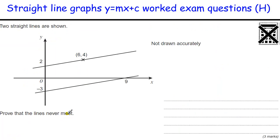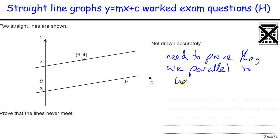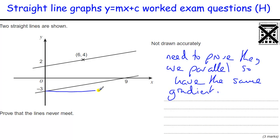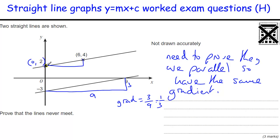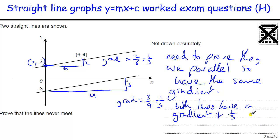Two straight lines shown. Prove that the lines never meet — they never meet, meaning we need to prove they are parallel, i.e., they have the same gradient. Parallel lines have the same gradient. Going across 9 and up 3, the gradient is 3 divided by 9, which is 1 third. The other line crosses at (0, 2) and goes 6 across and up 2, so gradient equals 2 divided by 6, which is also 1 third. Both lines have a gradient of 1 third. Therefore, parallel.